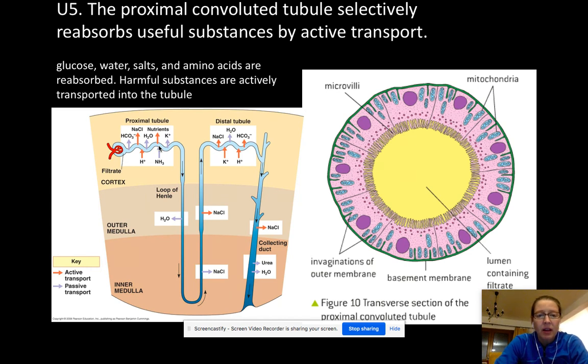And these arrows, if you're curious, show which things are generally actively transported out. And definitely salts and things like glucose and those types of nutrients are going to be actively transported out.